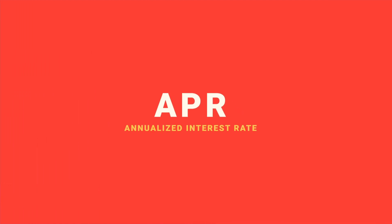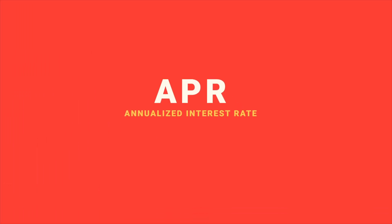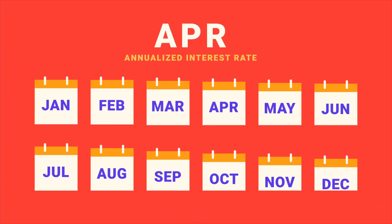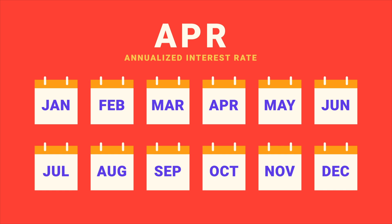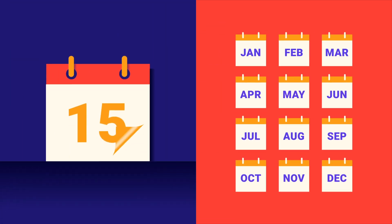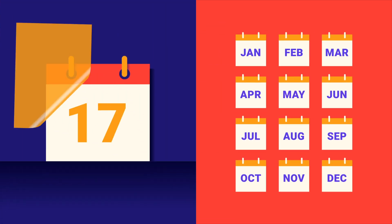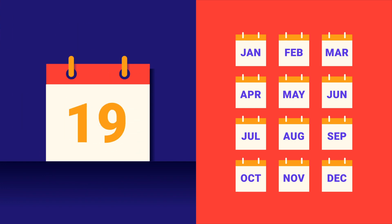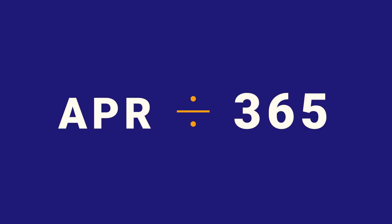As its name suggests, APR is an annualized interest rate. It represents the yearly cost of borrowing money. Most credit card companies calculate interest using a daily or monthly periodic rate based on your APR. To determine the daily periodic rate, for example, APR is divided by 365 days in a year.